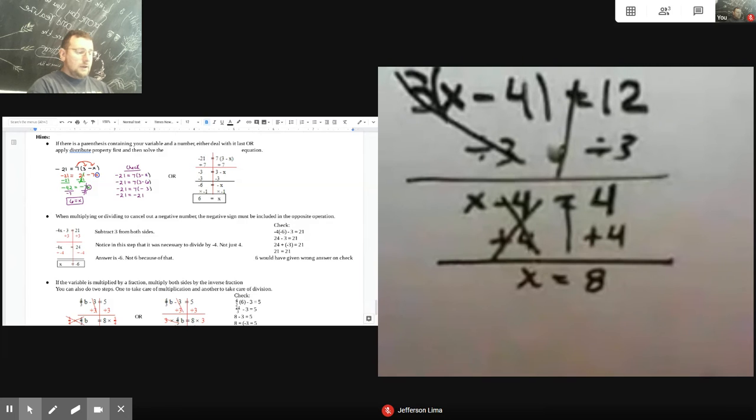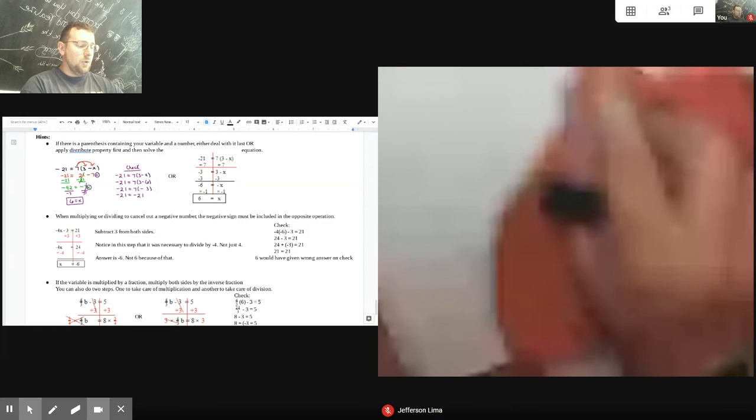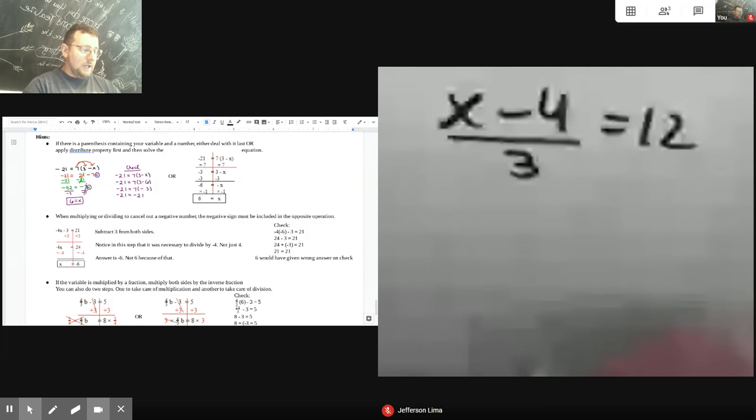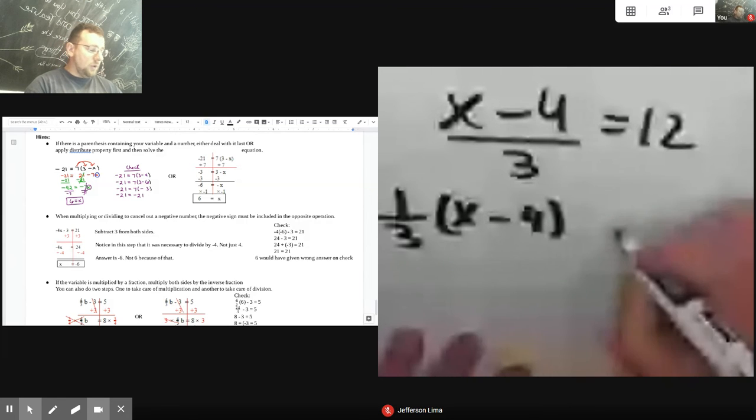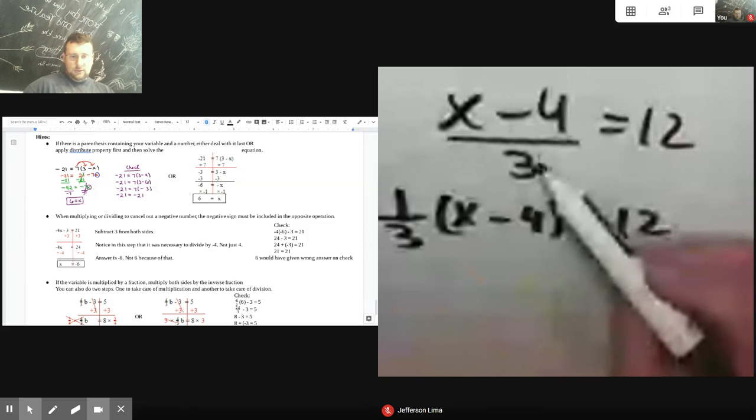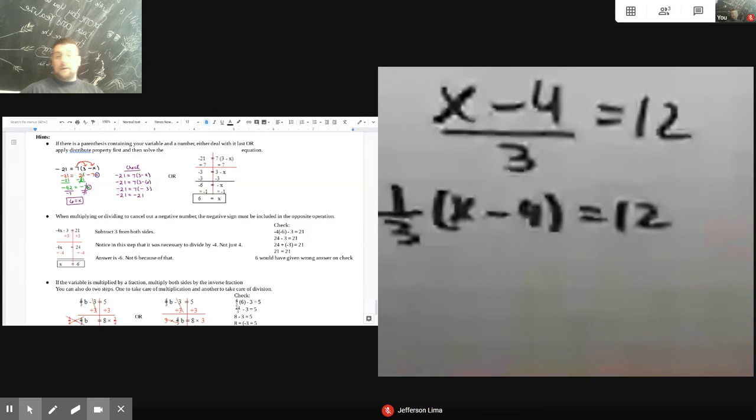And by the way, I'm going to change the problem here really quick. Start back from the start. If this was written like this, x minus four divided by three equals 12, that's the same thing as writing it like this: x minus four in parentheses times one third equals 12. So if you see something like this, it's as if it's like this. So you still have a parentheses problem here that you would have to solve. And you would start by multiplying both sides by three to get rid of that.